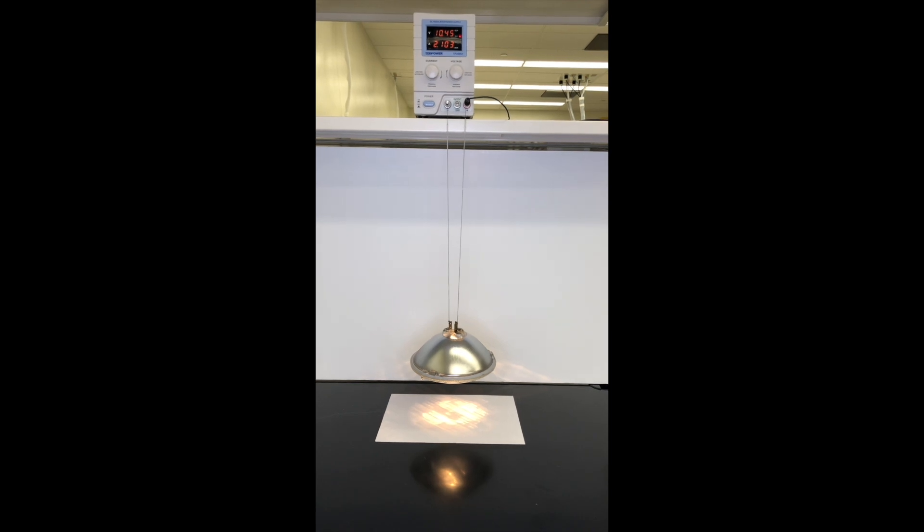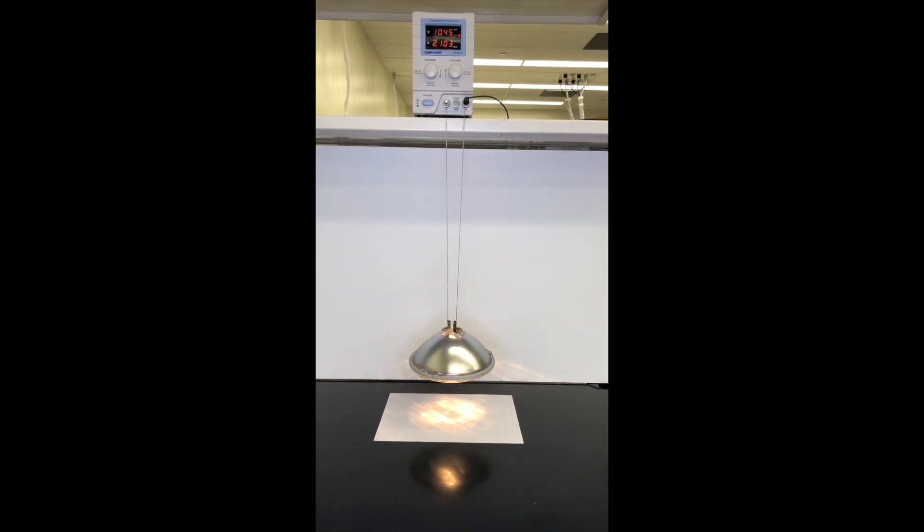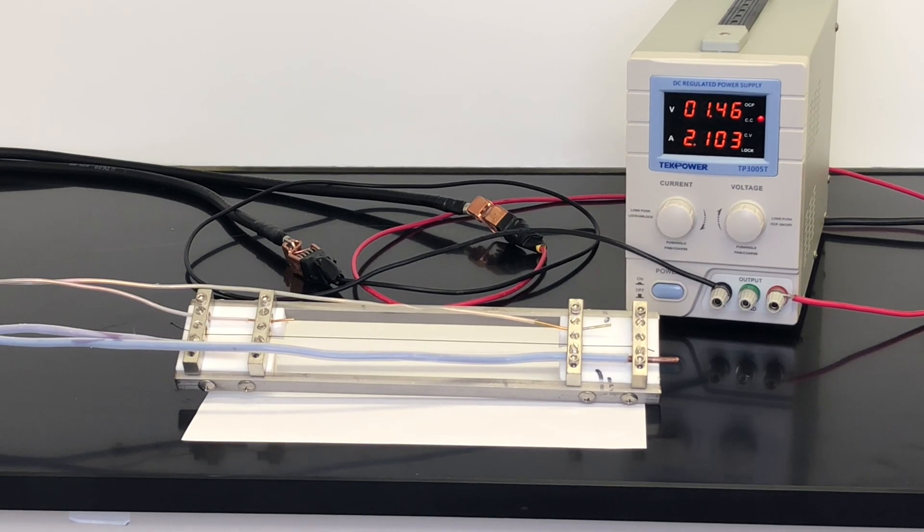We're passing 2.1 amps of current through this yarn to light the lamp, but you may be wondering how much current a yarn like this can sustain. Of course, there isn't a simple answer to that question.